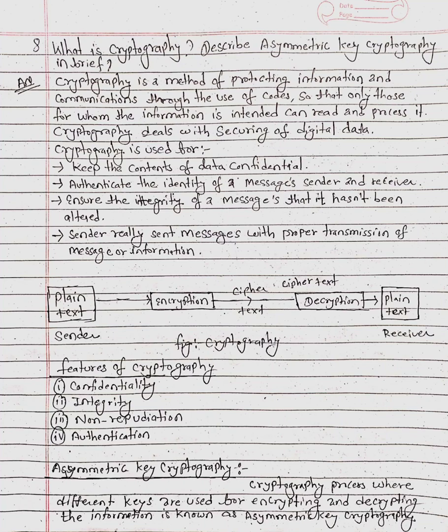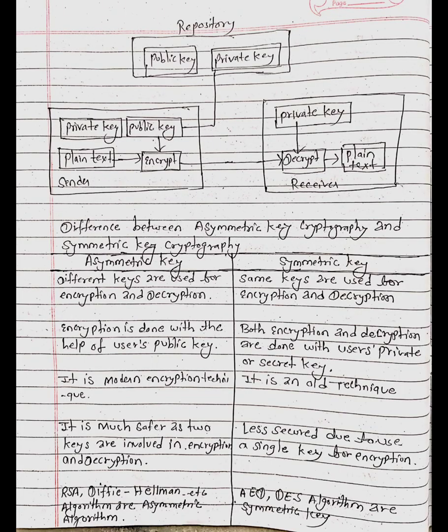Here is the figure of asymmetric key cryptography. On the sender's side, both private and public keys are available, but on the receiver's side only the private or secret key is available. By using the private key, the receiver can decrypt the ciphertext and generate the plaintext. On the sender's side, the plaintext is encrypted using the public key, and it will be different from the private key.